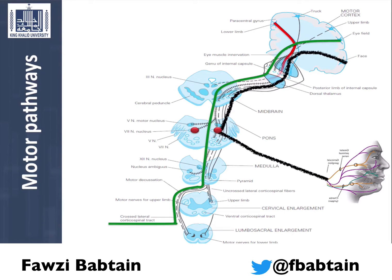Leg fibers will also descend down all the way to the lower medulla, where the majority will also cross to the contralateral corticospinal tract to supply the lower extremities.